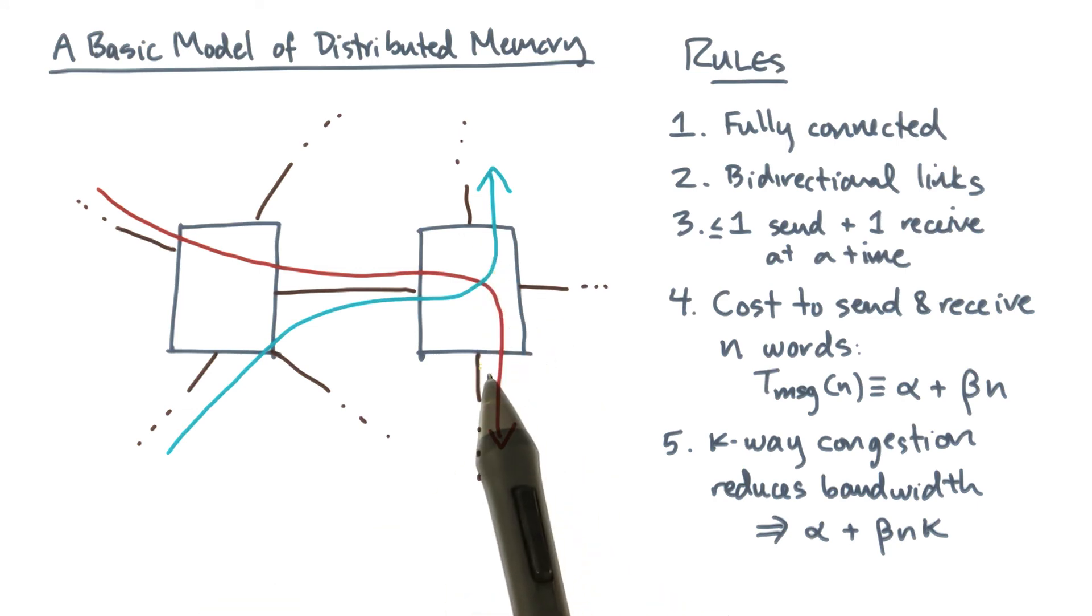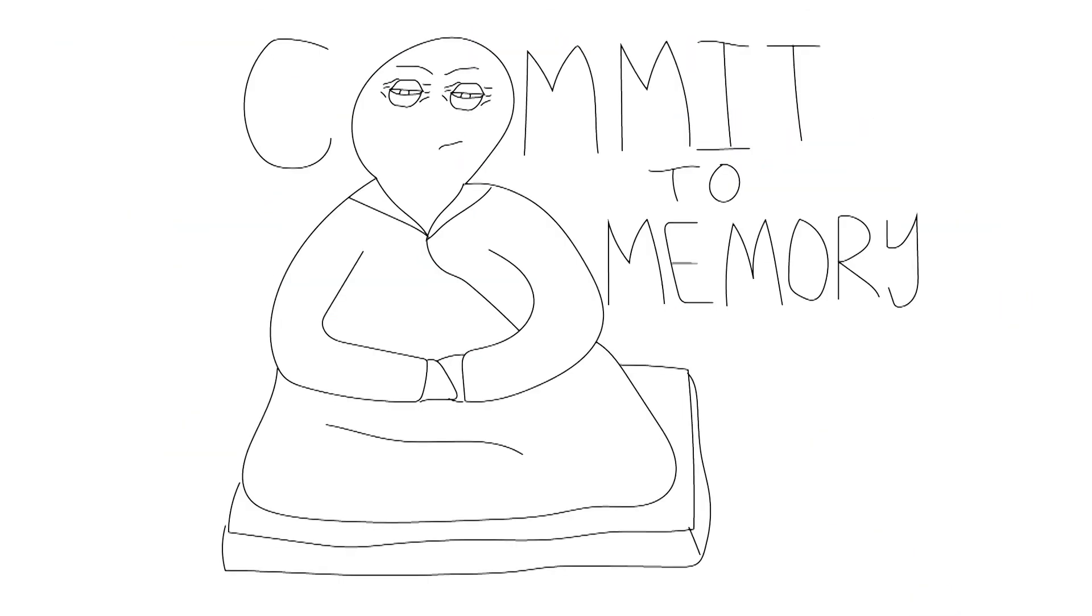So if these two messages are being transmitted in parallel, instead of observing a parallel execution time of alpha plus beta n, supposing that the messages are the same size n, what you'll see instead is a cost of alpha plus beta times n times 2. Okay, so take a second to look at these rules and commit them to memory.